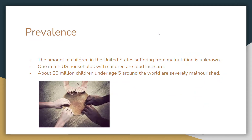Now we're going to talk about the prevalence of pediatric malnutrition. The number of children in the United States who suffer from pediatric malnutrition is actually unknown, but what we do know is 1 in 10 US households with children are food insecure. Food insecurity is defined as a lack of regular access to healthy food and enough food. About 20 million children under the age of 5 around the world are severely malnourished.